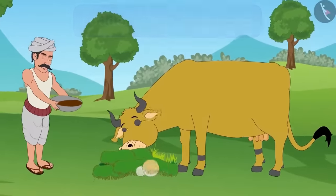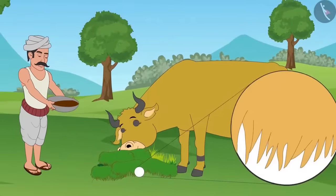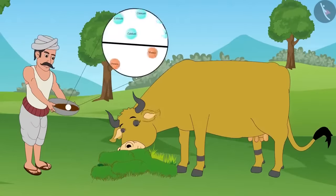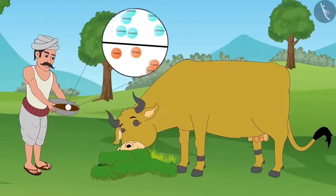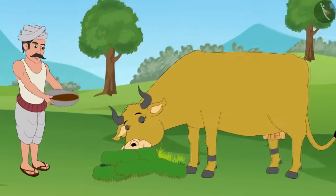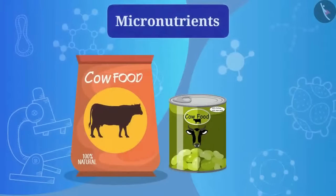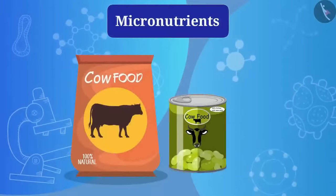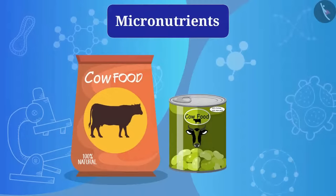Coarse feed contains mostly fibers and concentrate contains high levels of proteins and other nutrients. Do you know besides this, what they are given to eat? In addition to such nutritious food ingredients, micronutrients are given to promote animal health and milk production.